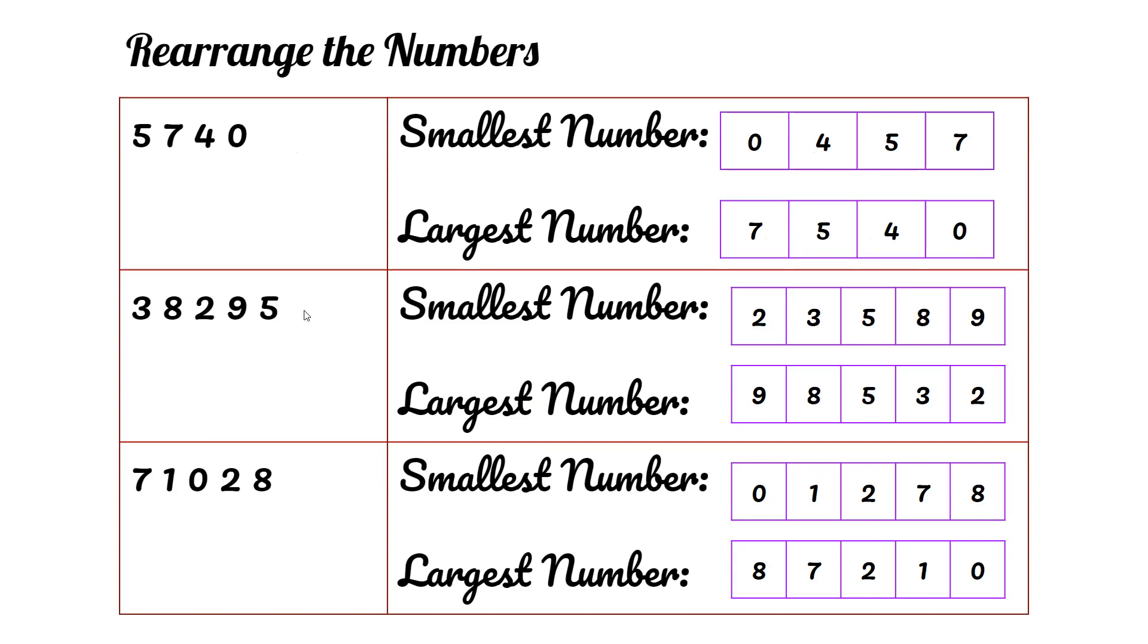38,295. Smallest number is 2, then 3, then 5, 8, and 9. So the smallest number is 23,589.